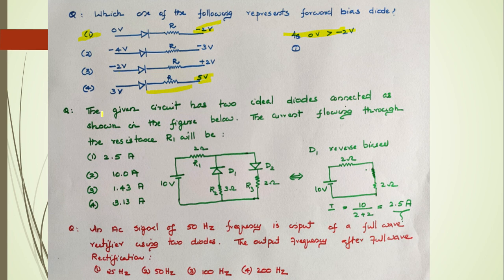MCQ Problem 2: A circuit has two ideal diodes D1 and D2. The current flowing through resistance R1 is to be found. Analyzing current flow from positive to negative: D1 is reverse biased, so the current path is through R1, D2, and R3. With 10 volts across a total of 2 + 2 = 4 ohms, the current is 2.5 amperes.